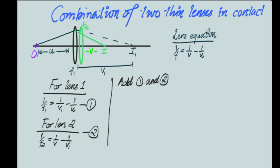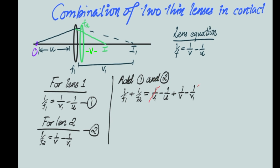Now if we add these two equations 1 and 2, let us see what we get. Adding 1/f1 plus 1/f2, which equals (1/v1 minus 1/u) plus (1/v minus 1/v1). We can cancel the 1/v1 terms, so finally we get 1/f1 + 1/f2 = 1/v minus 1/u. We will consider this as equation 3.